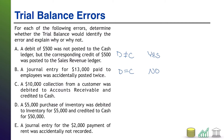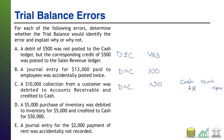Error C: a $10,000 collection from a customer was debited to accounts receivable and credited to cash. The correct entry should be debit cash and credit accounts receivable. The mistake is these two accounts were flip-flopped. However, flip-flopping them does not change the fact that you had a debit of $10,000 and a credit of $10,000. Debits and credits still equal each other, so no, the trial balance would not catch this mistake.